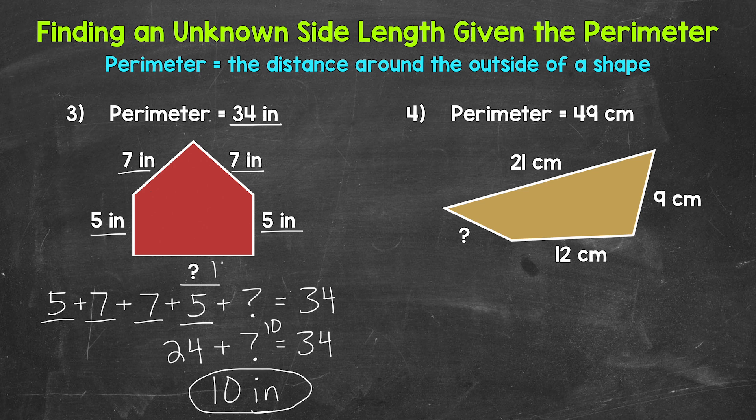The missing side length is 10 inches. We can double check: five plus seven is 12, plus seven is 19, plus five is 24, plus 10 inches gives us that perimeter of 34 inches. So we are correct.